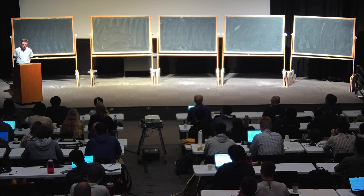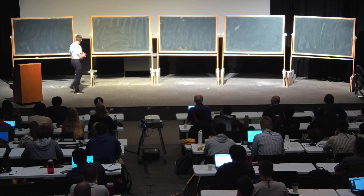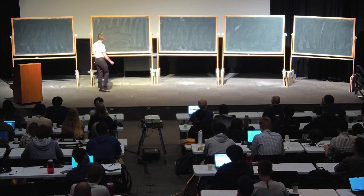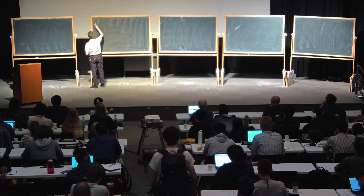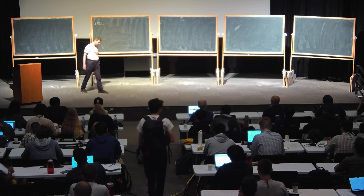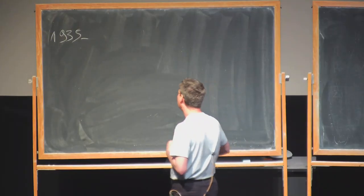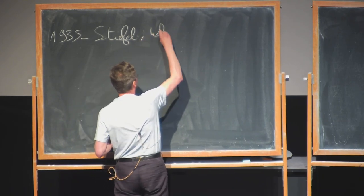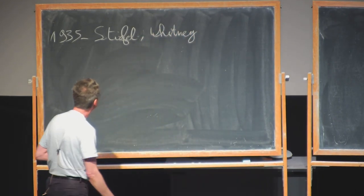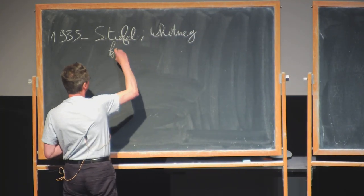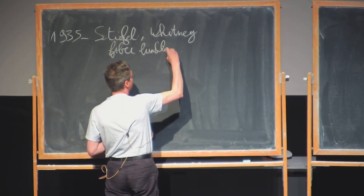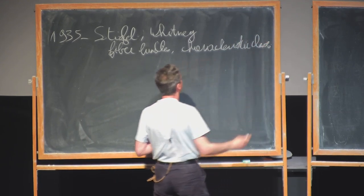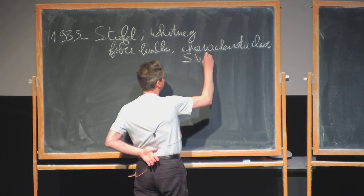I'd like to start with some historical comments. There is a really incredible year for algebraic topology and geometric topology: it's 1935. In this year, there was the PhD of Stiefel and independent work of Whitney, which introduced two things: first, a definition of fiber bundle, and then characteristic classes — what we now know as Stiefel-Whitney characteristic classes.